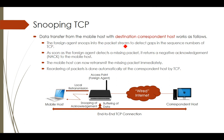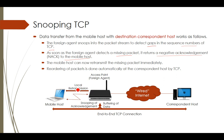The foreign agent snoops into the packet stream to detect gaps in the sequence numbers of the TCP flow. When the mobile host is sending packets, the access point snoops the line to check sequence numbers. If there is any gap in the sequence numbers, the foreign agent immediately sends a negative acknowledgement to the mobile host. On receiving the negative ACK, the mobile host can retransmit the missing packet immediately.